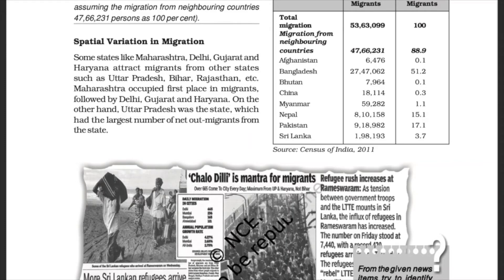Spatial Variation in Migration: Some states like Maharashtra, Delhi, Gujarat, and Haryana attract migrants from other states such as Uttar Pradesh, Bihar, and Rajasthan. Maharashtra occupied first place in attracting migrants, followed by Delhi, Gujarat, and Haryana. On the other hand, Uttar Pradesh was the state with the largest number of net out-migrants.